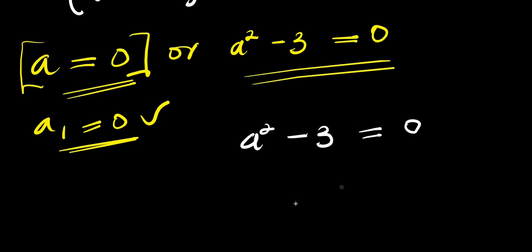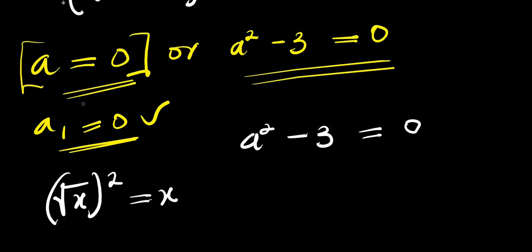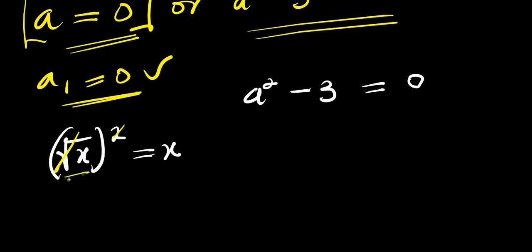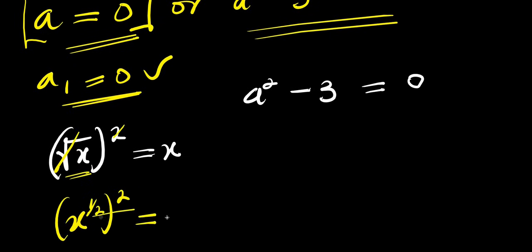We can apply difference of two squares, but first let's recall this identity: the square root of x raised to the power of 2 equals x. This is because the square root is the same as the exponent 1 over 2, and when you raise it to the power of 2 you get 2 over 2, which is 1, leaving just x.